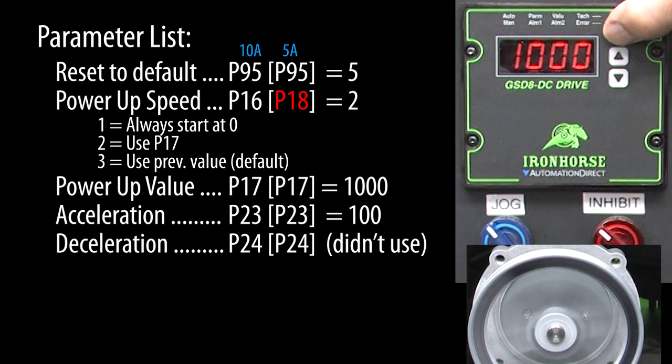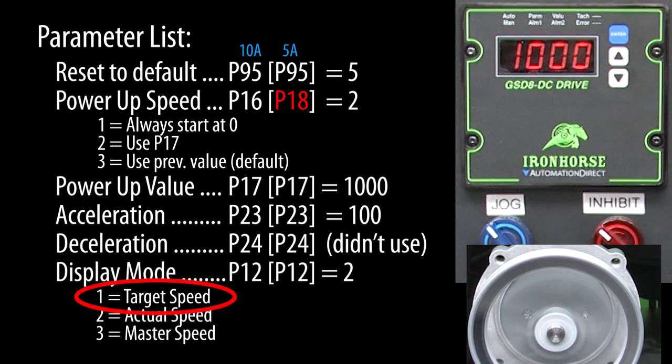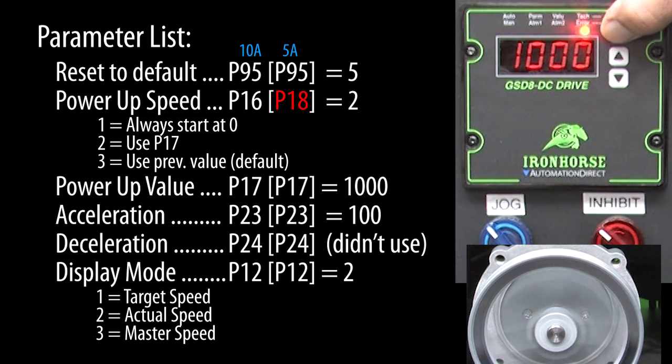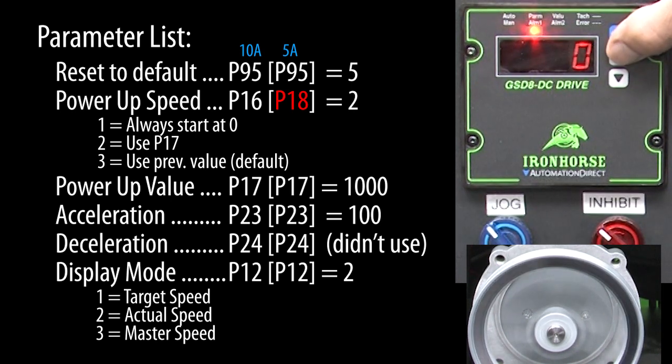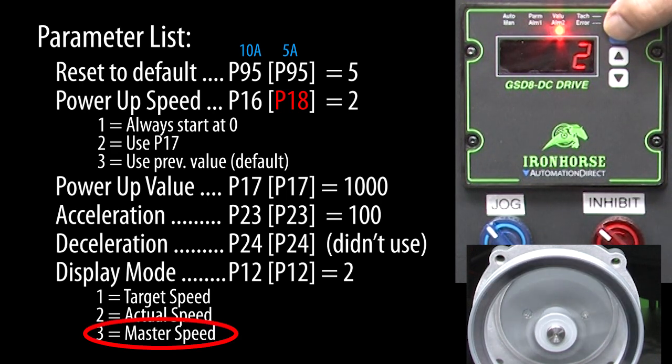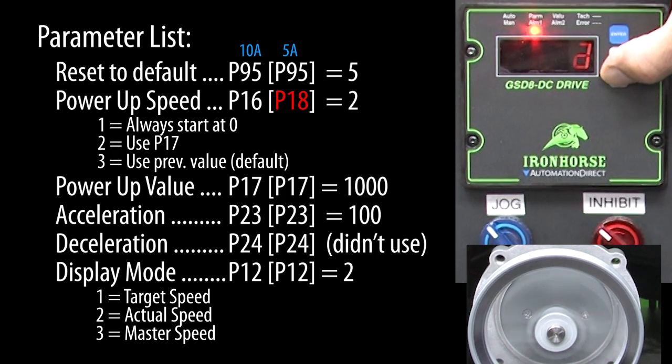Pressing enter over and over to see the actual motor RPM is a pain. Can we tell the display to show that all the time? Sure. The number we see in the display by default is the target speed. Let's change that to the actual speed so we don't have to press the enter key to see the tach. Hold the enter key for 3 seconds, scroll to parameter 12, press enter. We see we are now in value entry mode and we'll change that to a 2. Notice that you can also display the master's RPM if this drive is a follower. That's great for debugging master follower configurations because you can see if the follower is getting the pulses from the master.